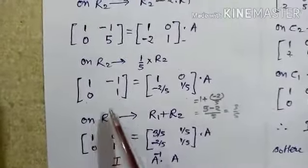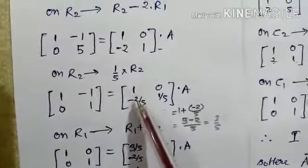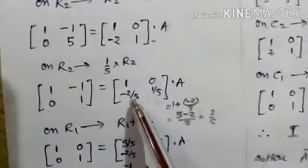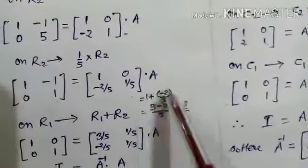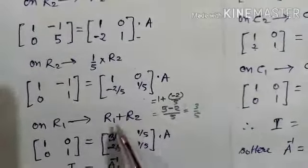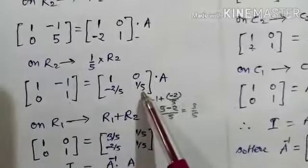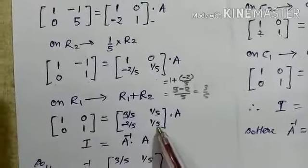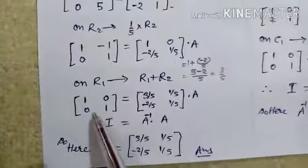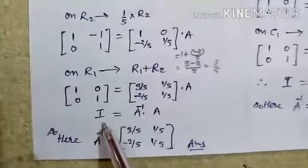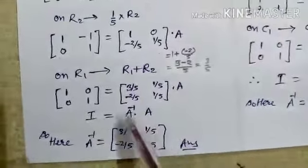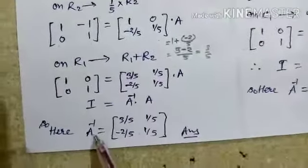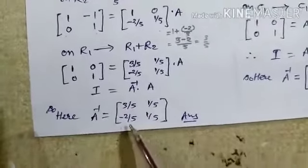The second row stays as [0, 1]. On the right side, applying R1 + R2: 1 + (−2/5) = 3/5, and 0 + 1/5 = 1/5. The left side is now the identity matrix [1, 0; 0, 1], and the right side matrix is [3/5, 1/5; −2/5, 1/5]. Since A·(A inverse) = I, A inverse equals [3/5, 1/5; −2/5, 1/5].